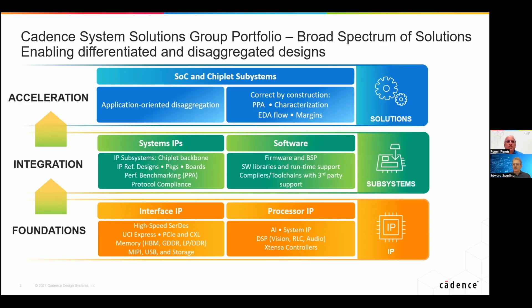This is the evolution of Cadence System Solutions Group. We started as a simple IP provider — best-in-class processor IP, the TenSilica Extensible Controllers, DSPs targeted at different applications, AI engines, and Interface IP including memory controllers and high-speed interfaces. On top of that, we provide all the software tools, libraries, and support. We then added more system IPs, and this is where the NOC falls in. The NOC is part of the system IP we provide. We also provide reference designs, benchmarking, and things that help our customers make decisions and use our IP.